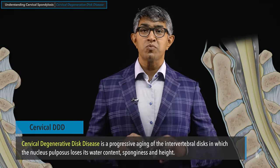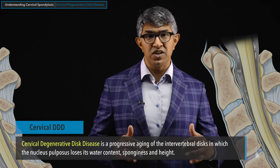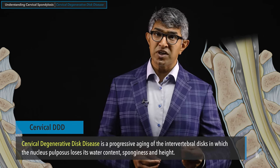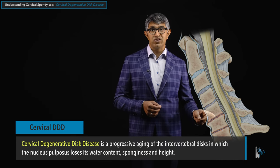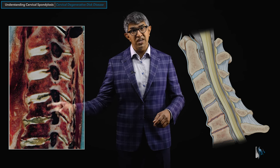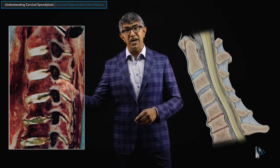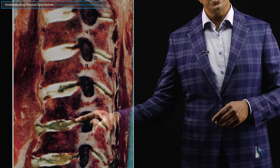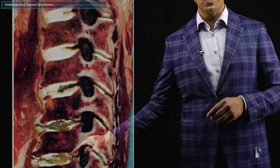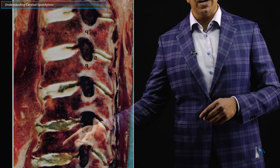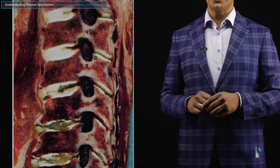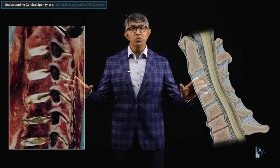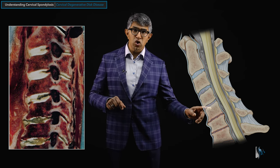Cervical degenerative disc disease is a progressive aging of the intervertebral discs in which the nucleus pulposus — the center soft, pulpy part — loses its water content, loses its sponginess, and frequently loses its height. A frozen cadaver section nicely illustrates this: a healthy disc, then increasing degeneration going downward, with discs losing whiteness and cushion, water content diminishing, and some joint changes visible as a consequence.